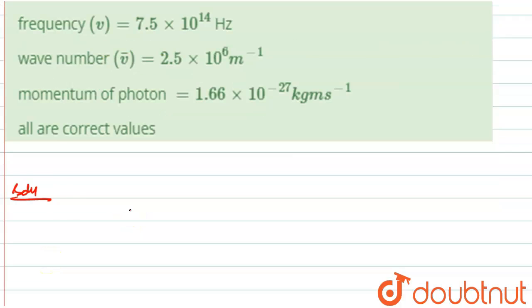So lambda, which is wavelength, is equal to 400 into 10 to the power minus 9 meter, because nanometer is equal to 10 to the power minus 9. So wave number, which is equal to 1 upon lambda, is equal to 1 upon 400 into 10 to the power minus 9, is equal to 2.5 into 10 to the power 6 meter inverse.